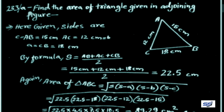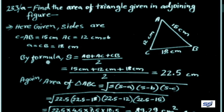Problem 233A: Find the area of the triangle given in the adjoining figure. Triangle ABC has sides AB = 15 cm, AC = 12 cm, and BC = 18 cm. By formula, S = (a + b + c) / 2 = (15 + 12 + 18) / 2 = 45 / 2 = 22.5 cm. The semi-perimeter S = 22.5 cm.